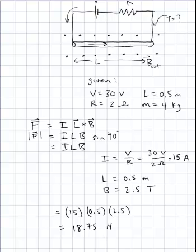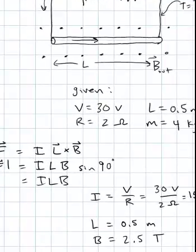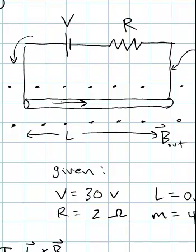And now let's think about direction. The current is moving to the right. The magnetic field is up out of the page. So when I do my right hand rule I get that the force points towards the bottom of the page. The magnetic force.